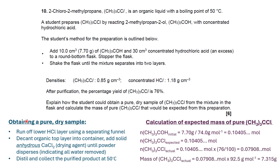Obviously it's not 100% yield — it's 76%. So I take that value and multiply it by 76/100 to account for the 76% yield. That gives 0.07908 moles, which I then multiply by 92.5 g/mol — the molar mass of (CH₃)₃CCl — to give a final answer of 7.35 grams.